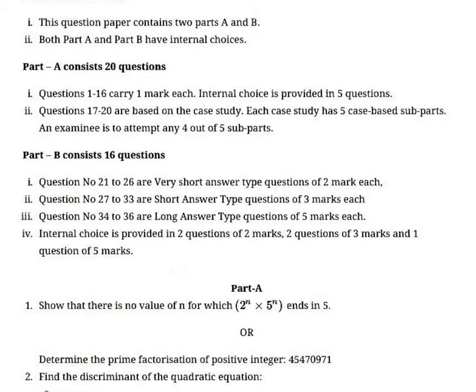Part B consists of 16 questions. Question number 21 to 26 are very short answer type questions, 2 marks each. Question number 27 to 33 are each 3 marks. And question number 34 to 36 are long answer type, each carry 5 marks. Internal choices are provided in 2 questions of 2 marks, 2 questions of 3 marks and 1 question of 5 marks.